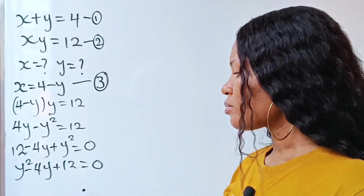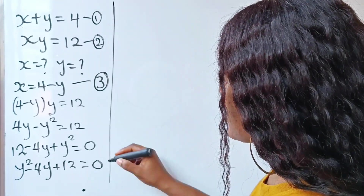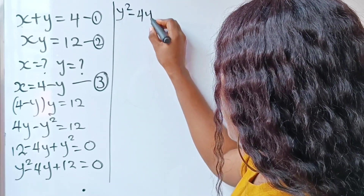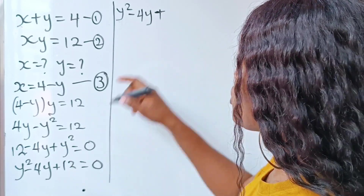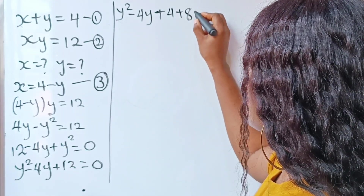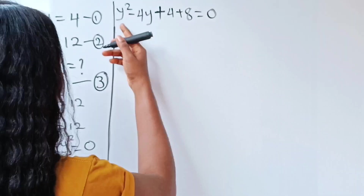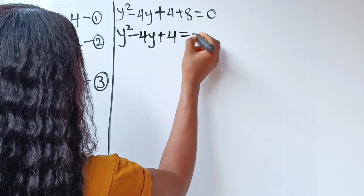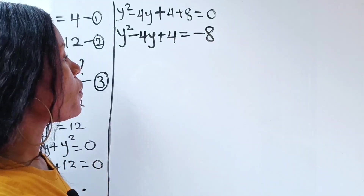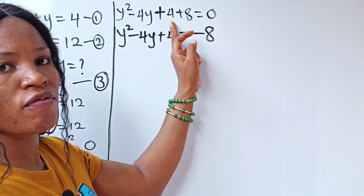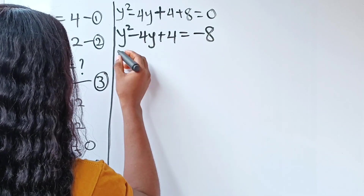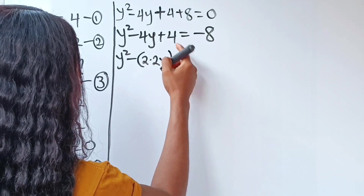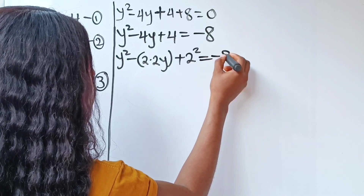Now let's rewrite this. We can rewrite this as y squared minus 4y plus — this 12 can be written as 4 plus 8 — is equal to 0. So we write this as y squared minus 4y plus 4 is equal to minus 8. You'll see why I had to split 12 as 4 plus 8. Now y squared minus 4y, where 4 is the same as 2 times 2, plus 4 which is 2 squared, is equal to minus 8.